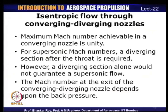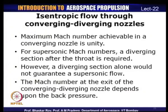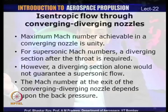Now let us look at the same scenario for a converging-diverging nozzle. The maximum Mach number achievable in a converging nozzle is unity, so for supersonic Mach numbers a diverging section is needed after the throat. However, a diverging section alone does not guarantee supersonic flow — it only happens with appropriate back pressure adjustment.